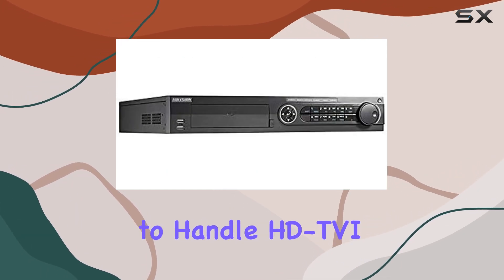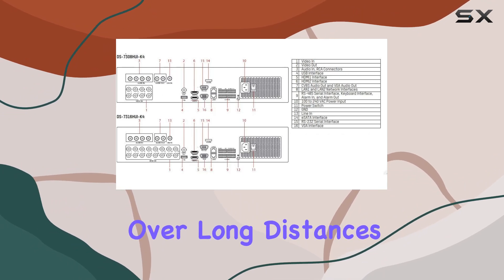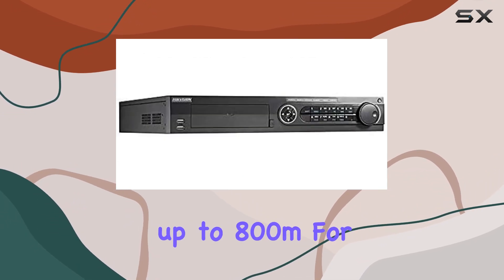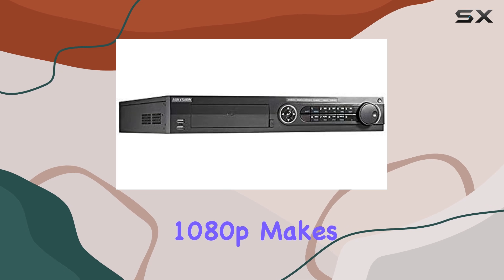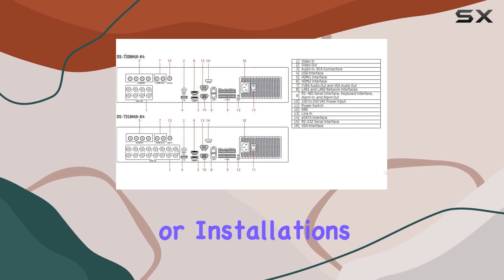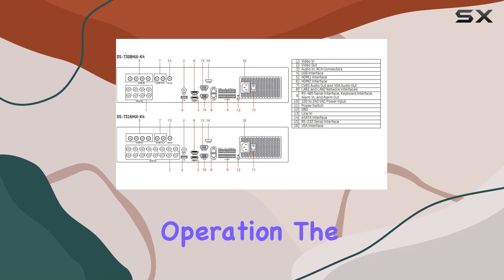The ability to handle HDTVI and CVBS signals over long distances, up to 800 meters for 1080p, makes it ideal for large premises or installations requiring extensive coverage.